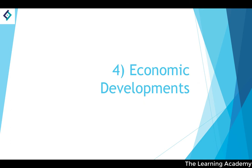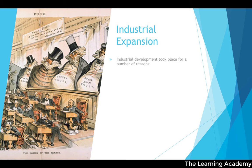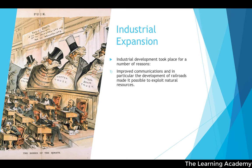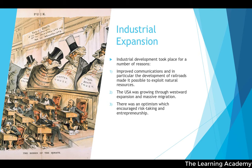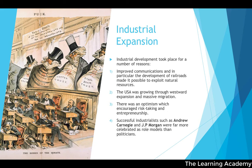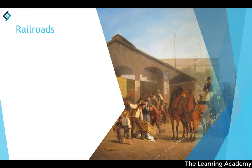Industrial development took place for several reasons: improved communications, particularly the development of railroads enabling exploitation of natural resources; the growing US population through westward expansion and massive migration; a cultural optimism encouraging risk-taking and entrepreneurship; and the fact that successful industrialists like Andrew Carnegie and J.P. Morgan were celebrated as role models more than politicians.